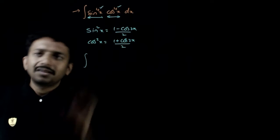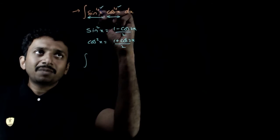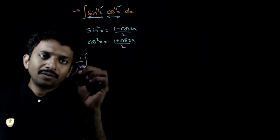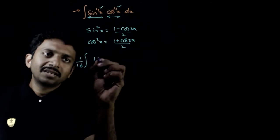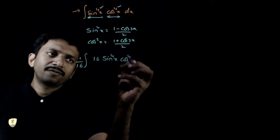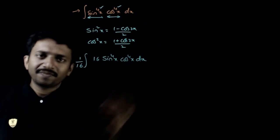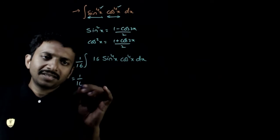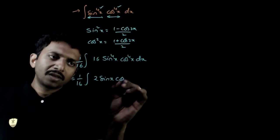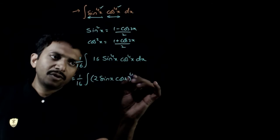So what I do is, because the powers of sin and cos are same, first I will do 1 by 16 times 16 sin power 4x cos power 4x dx. That is equal to 1 by 16 into 2 sin x cos x to power 4.